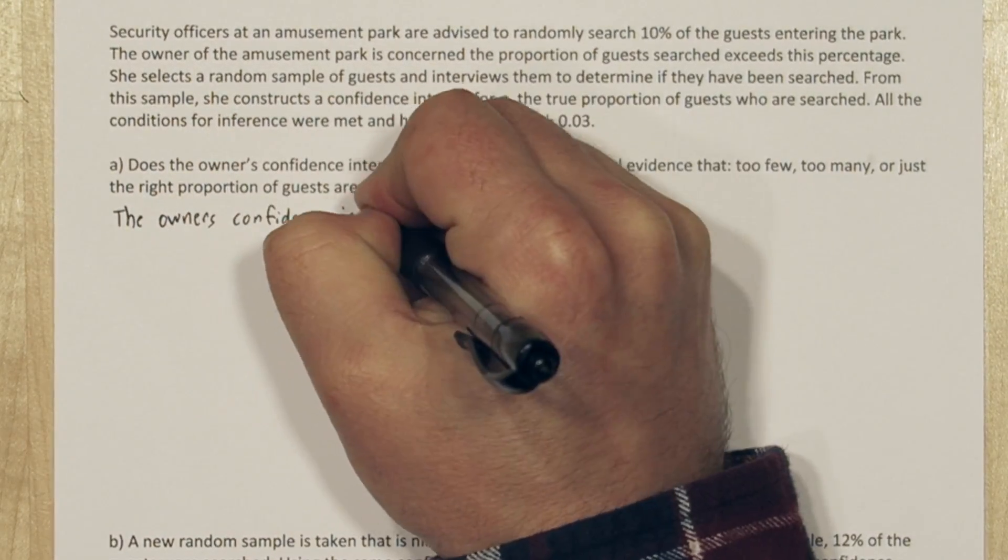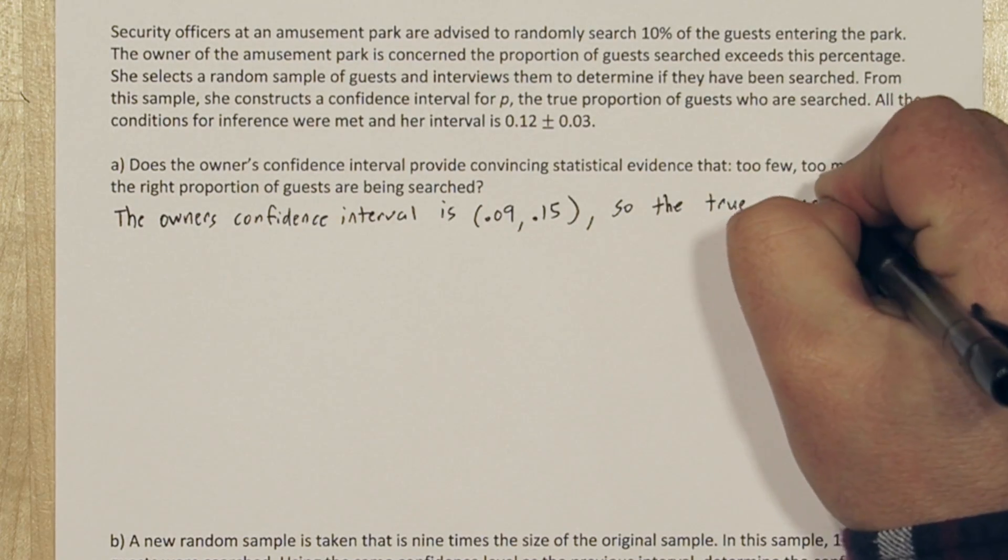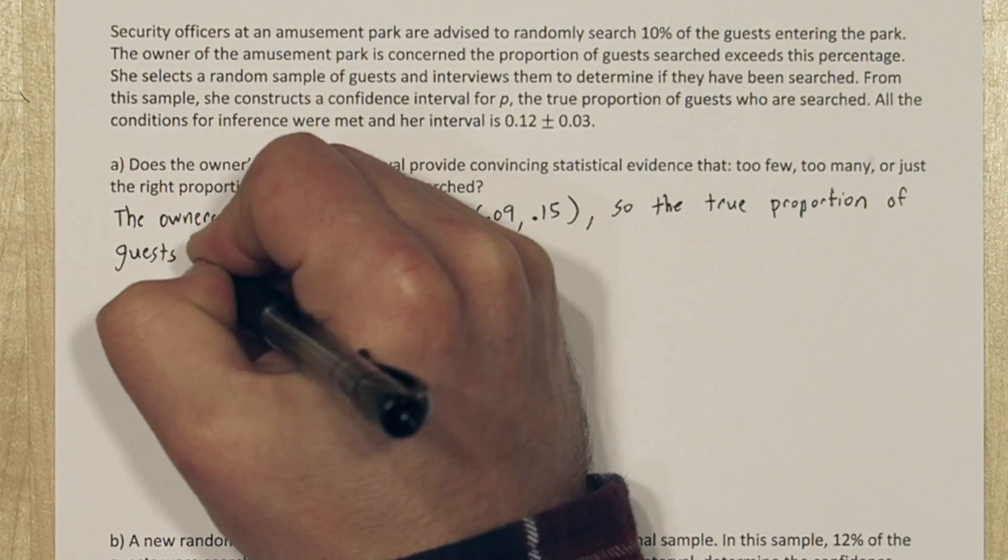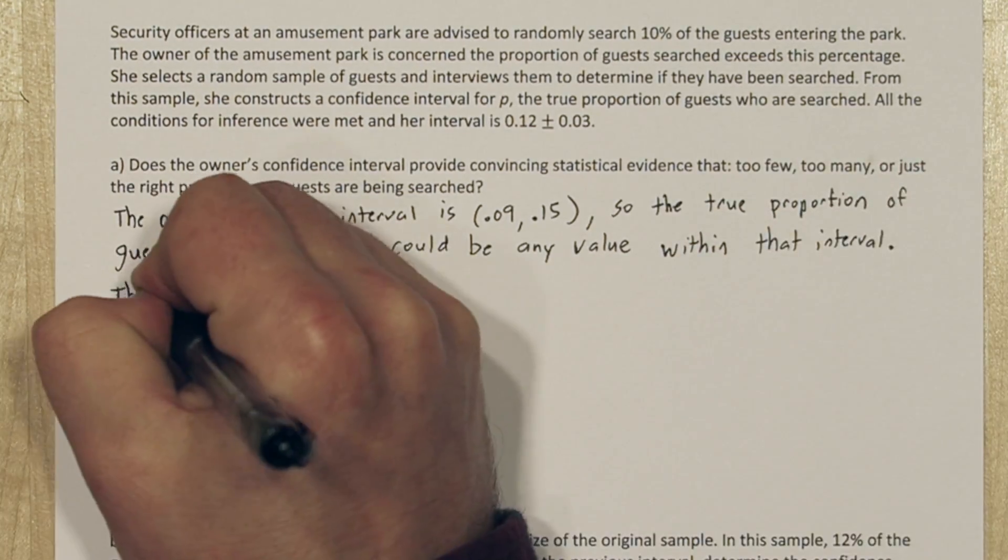We can use that point estimate and margin of error to calculate the owner's interval, and we get 0.09 to 0.15. So the true proportion of guests who are searched could be any value within that interval.